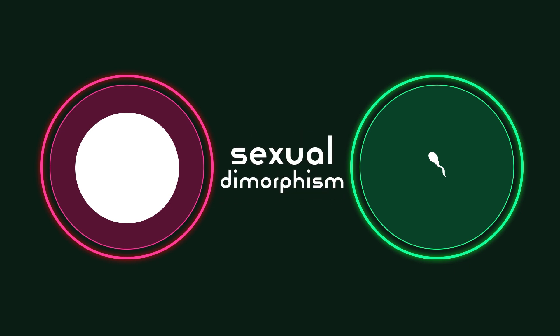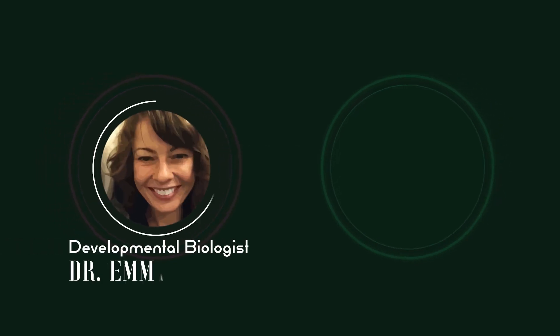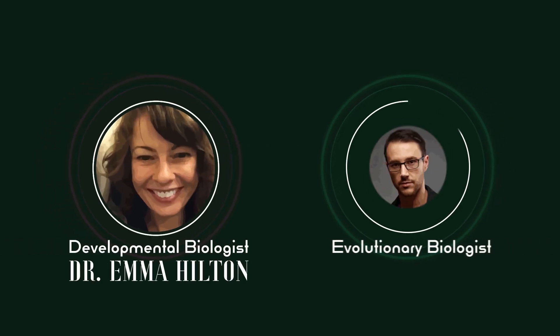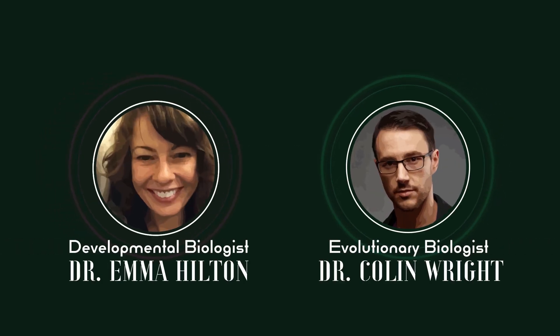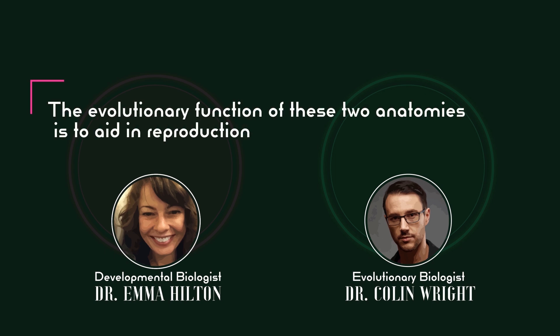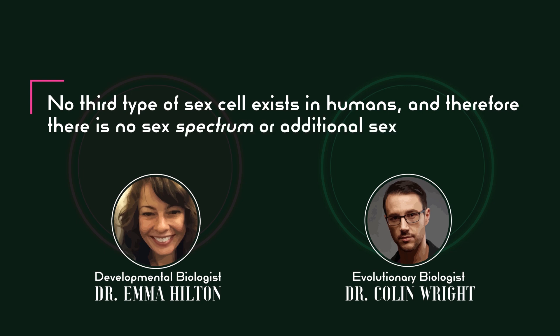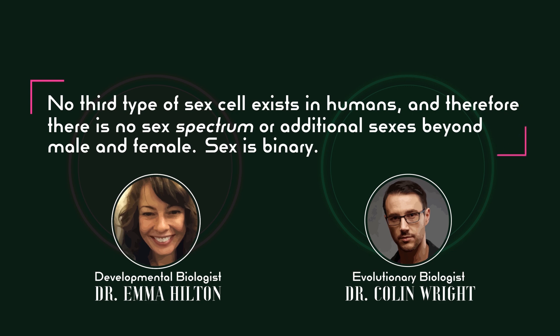In humans, this sexual dimorphism is so consistent that 99.98% of births are unambiguously male or female. As developmental biologist Dr. Emma Hilton and evolutionary biologist Dr. Colin Wright note: "The evolutionary function of these two anatomies is to aid in reproduction via the fusion of sperm and ova. No third type of sex cell exists in humans, and therefore there is no sex spectrum or additional sexes beyond male and female. Sex is binary."